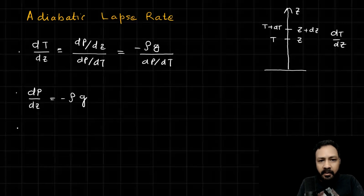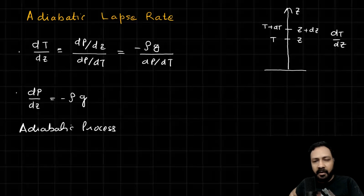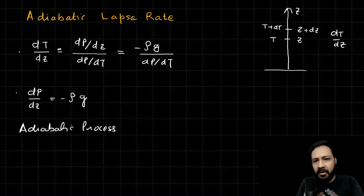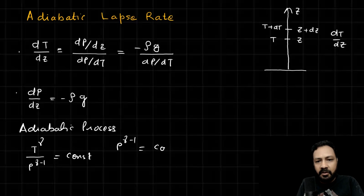I'm assuming the process is an adiabatic process. In an adiabatic process we can write a relation between p and v, or between T and v. But here I want to write the process in terms of p and T. The relation between T and p in an adiabatic process is: T^γ divided by p^(γ-1) equals a constant.